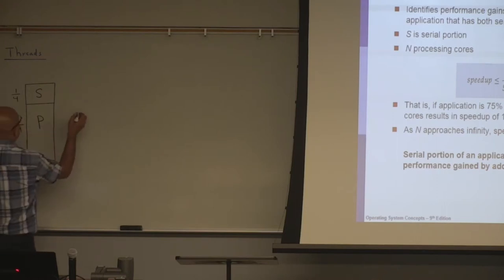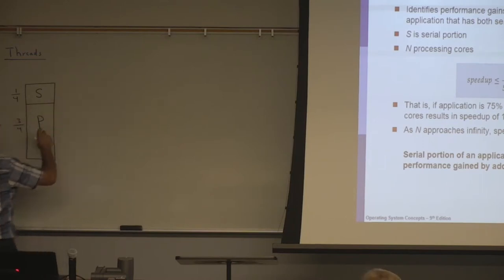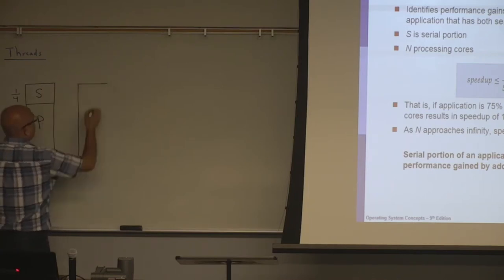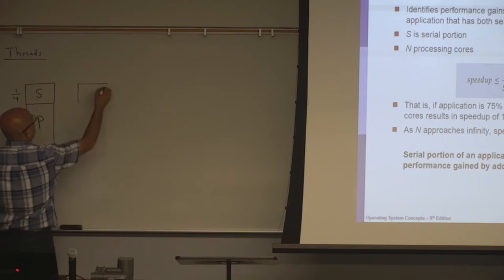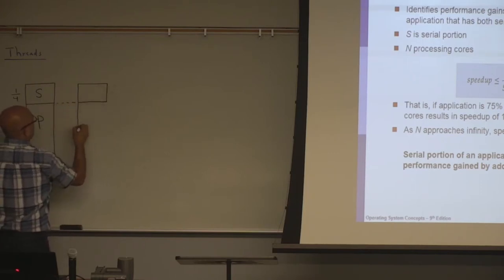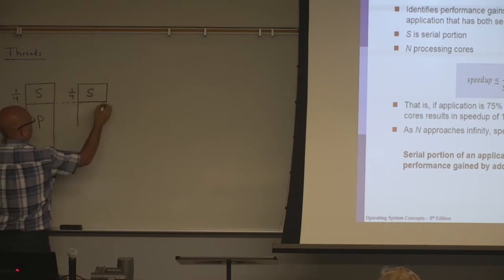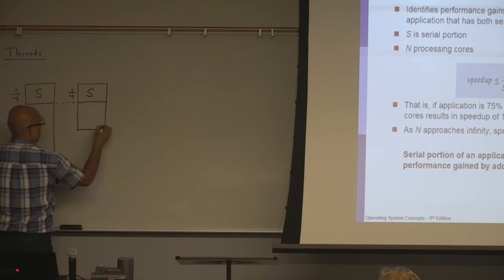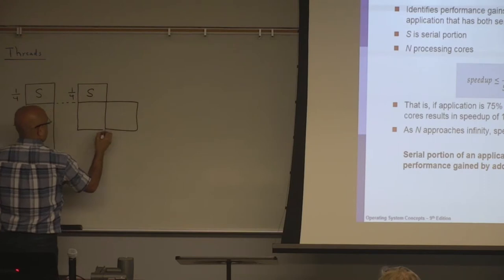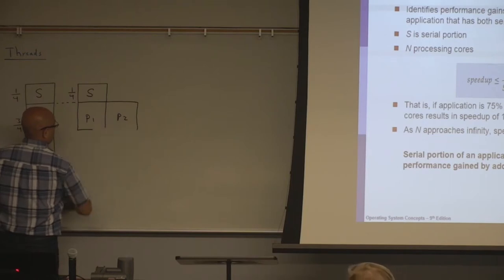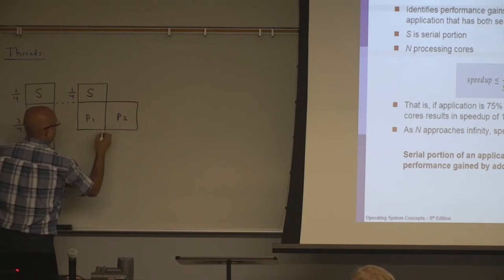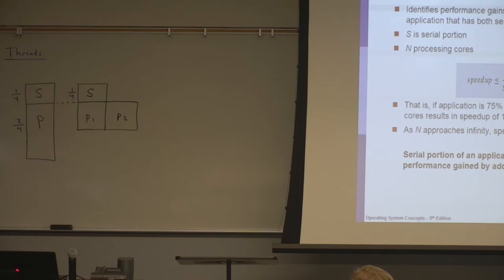Now suppose that I manage to divide this into threads — into two threads. So I will get this: the sequential part takes one quarter, and if I divide the rest into two threads, it's going to look like this. I have P1 and P2, divided into two threads. Now assuming that I divided it equally, what would this time be?